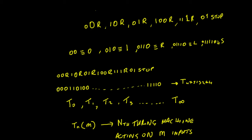We then form our contraction: 'zero' is given by zero-zero, the 'R' is given by zero-one-one-zero, the next element is given by zero-one-zero, and we continue all the way along until we get to 'stop', which is given by zero-zero-zero-zero-zero-zero.